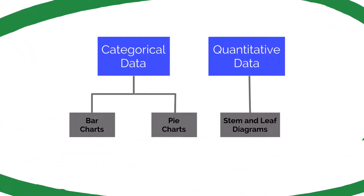Chapter 2.2 covers two of the most frequently used charts, which are bar and pie charts. Although stem and leaf diagrams are covered in the last learning outcome in this section, we won't be covering it in this video or in this course. The reason is I've never really seen or used this chart in practice. We're going to focus more on how to display categorical or qualitative data using bar and pie charts.